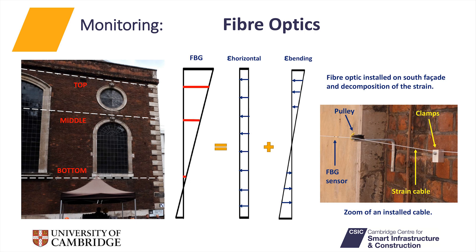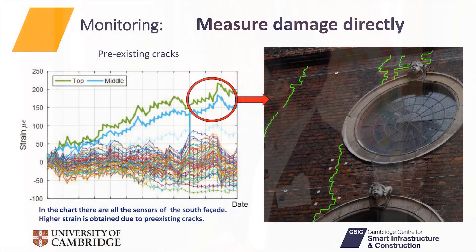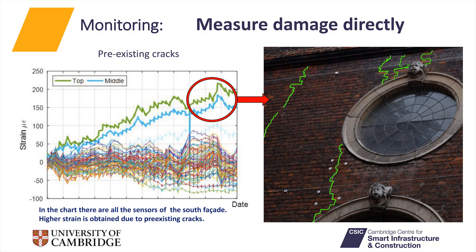Strain fibre optics were installed all around the church at three different levels. As a result, we are collecting strain in the cable direction — shown as the red line in the slide — and in combination with the laser scan it is feasible to decompose the strain into its horizontal and bending components. The strain is collected in real time with the advance of the tunnel, and it is important to pay attention to existing damage because, as shown in the chart, it may lead to localization of incoming damage. Two sensors recorded higher strain relative to the others because of an existing crack in that part of the facade.